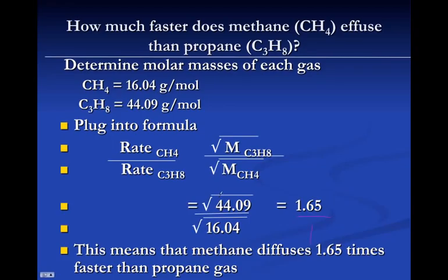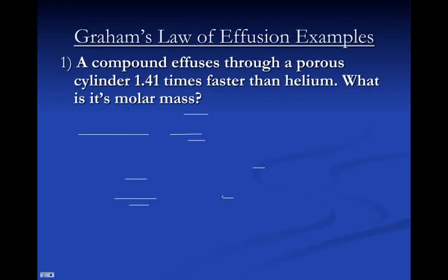Another way we could do that is, in this case, you had to find the rate. Let's say you were given the rates and you had to find a molar mass. Well, if you knew what gas you're dealing with, so we know that we're dealing with at least helium. And the question says it's faster than helium.